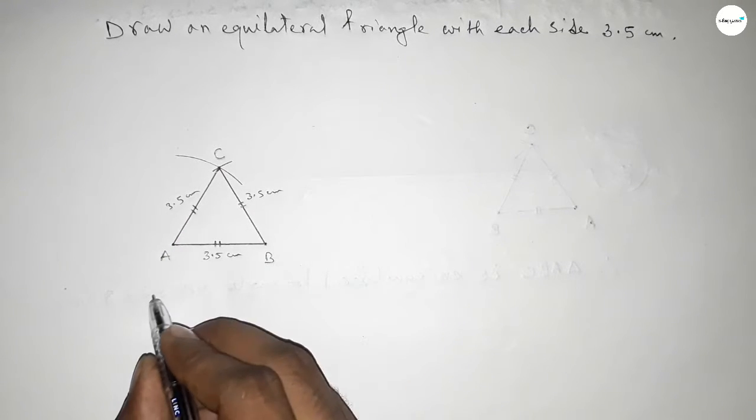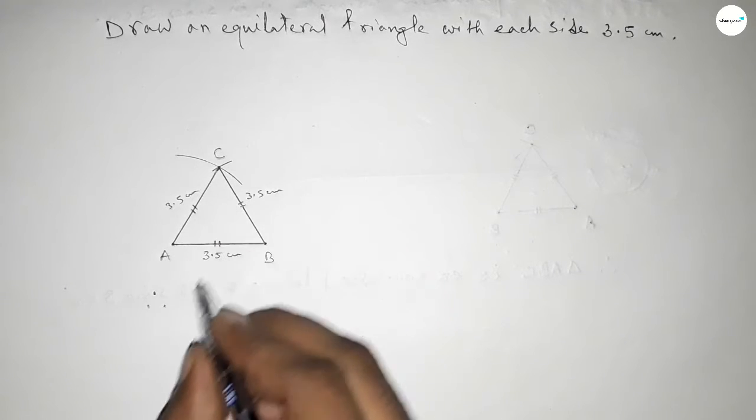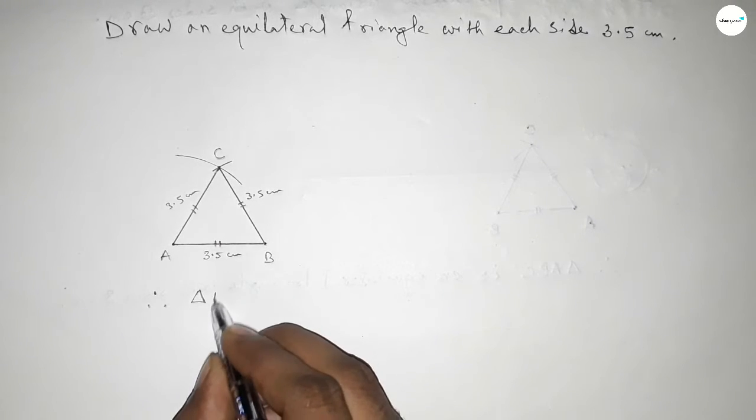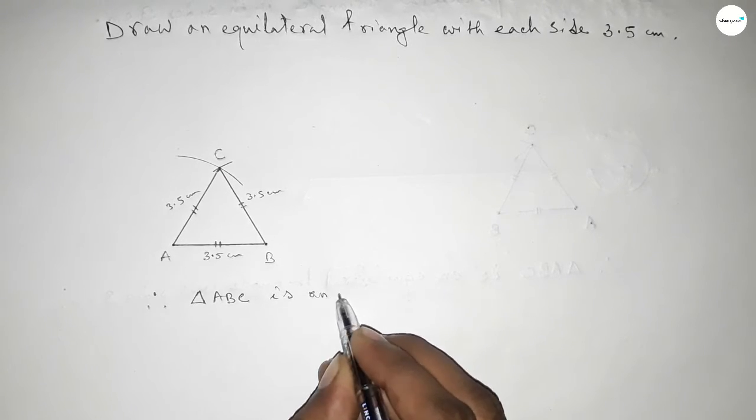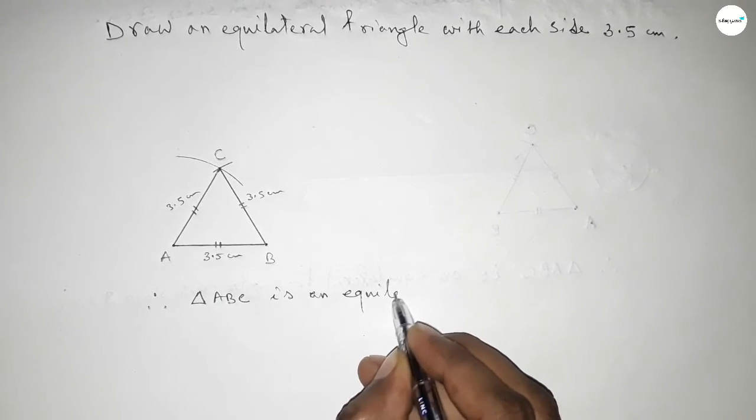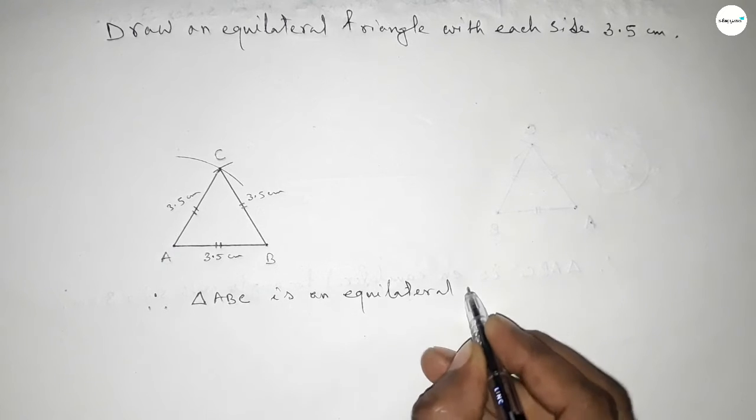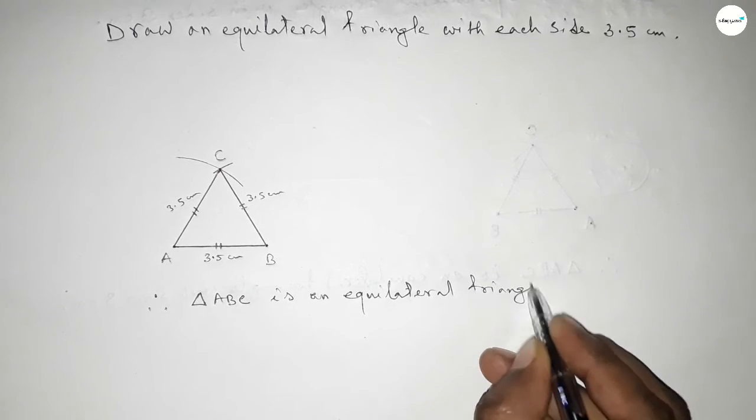Therefore triangle ABC is an equilateral triangle with each side 3.5 centimeter. So by this process we can construct an equilateral triangle with each side 3.5 centimeter.